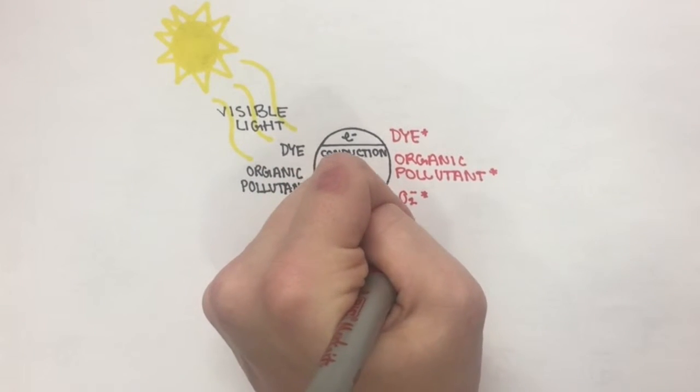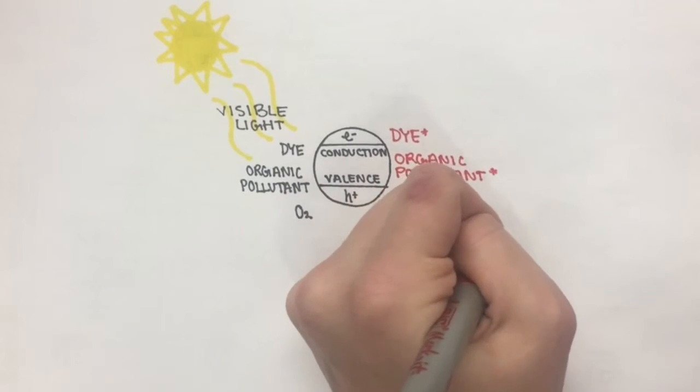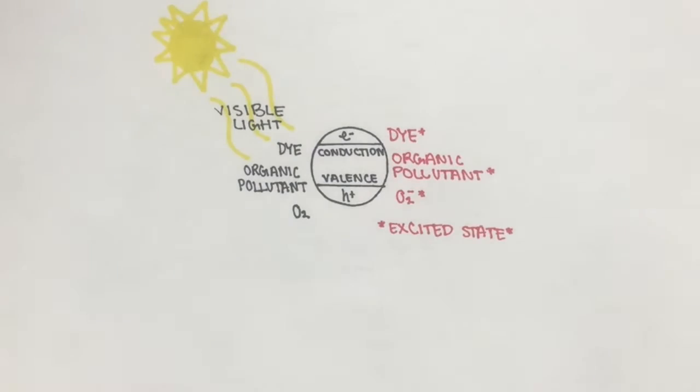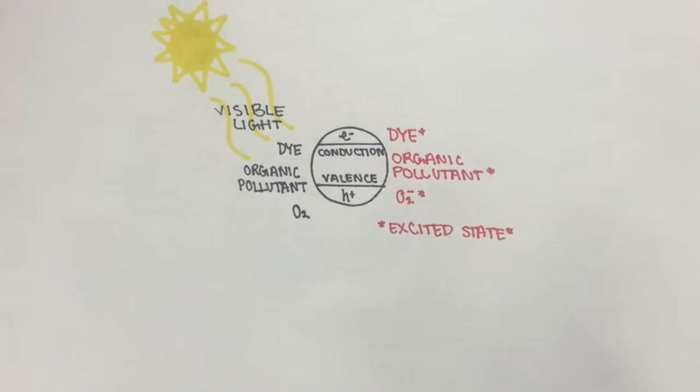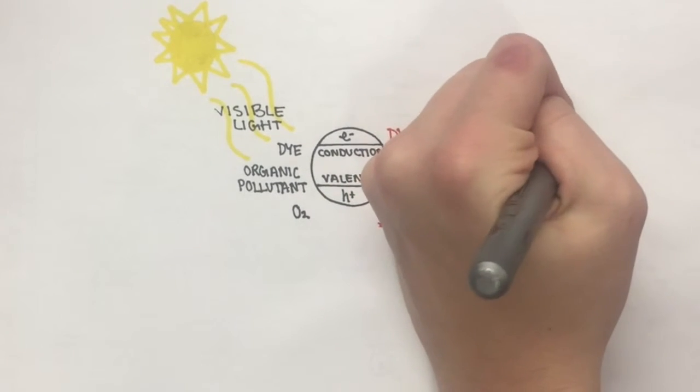The dye vastly increases the absorption of visible light while also decreasing the rate of electron hole pair recombination. By utilizing these dyes, we are able to harvest a much larger portion,